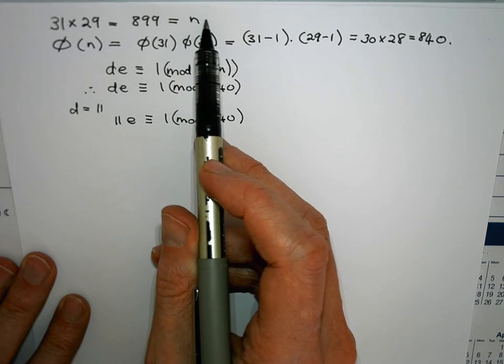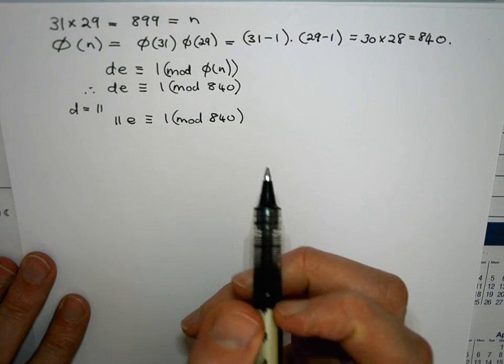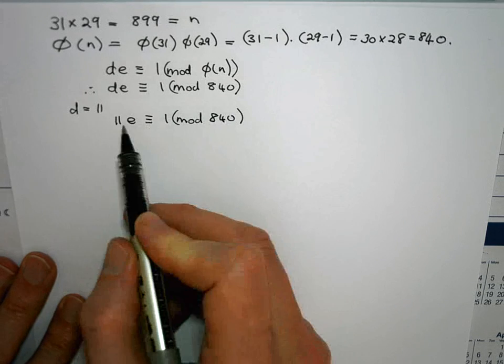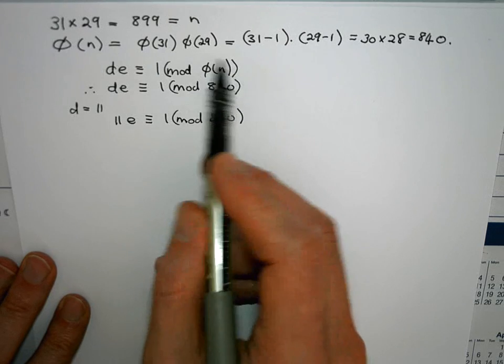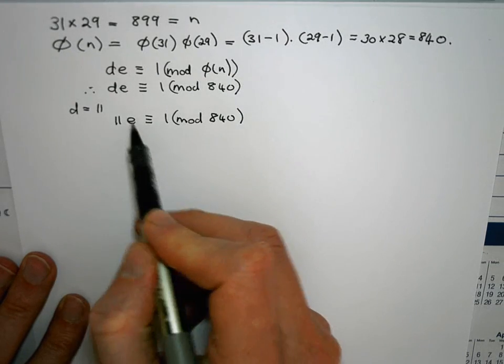And moreover this value of e needs to be less than n. Needs to be a remainder after division. Oh sorry, rather it should be less than φ(n). It should be a remainder after division by φ(n).